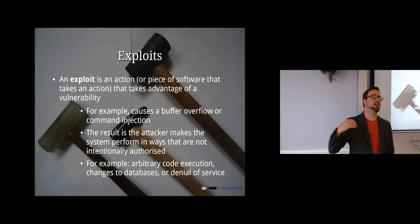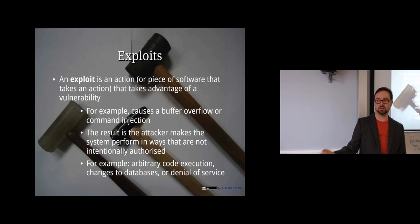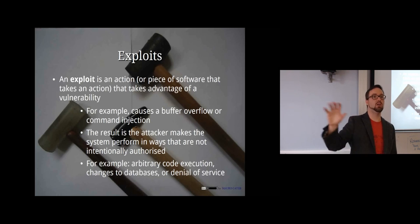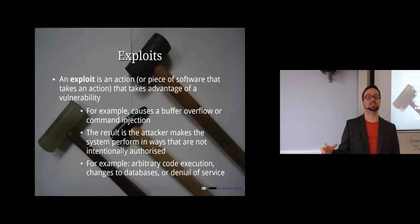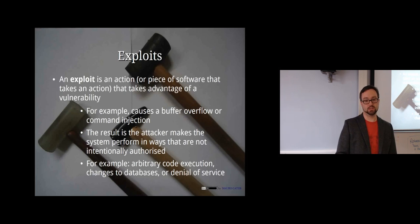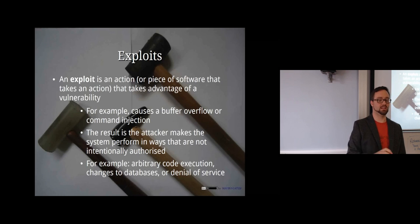An exploit is the piece of software that attacks that program mistake — it's the act of breaking a vulnerability. If there's a server with a vulnerability like Heartbleed or Shellshock, running an exploit means executing software designed to take advantage of that mistake. This might cause a buffer overflow or command injection, and as a result you could end up with arbitrary code execution — meaning you can make that computer do essentially anything.